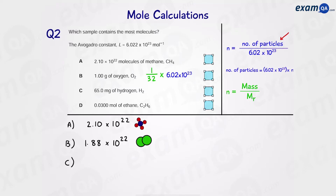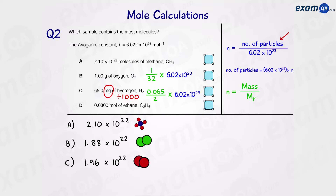Moving on to C — again, we've been given mass, but the mass is in milligrams. So we're going to divide by 1000 to turn it into grams first, giving us 0.065 grams. Just like in part B, we work out moles by doing mass over Mr. The Mr of H2 is simply 1 plus 1, which is 2. This fraction gives us the number of moles, then we times it by Avogadro's constant to get the number of molecules.